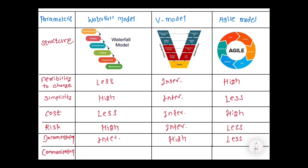Communication here implies the communication between design, development, testing, and other stages. The communication is very less in the waterfall model. In V model, the communication is intermediate, whereas in agile model, the communication is high.